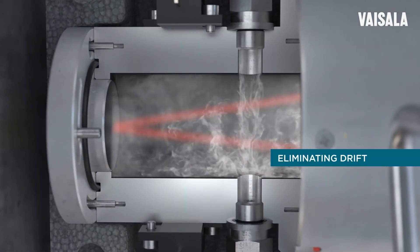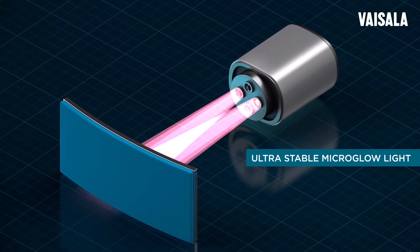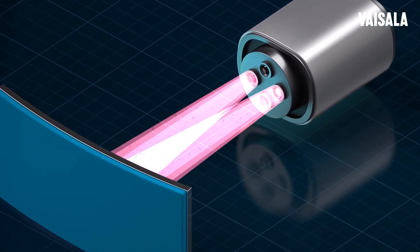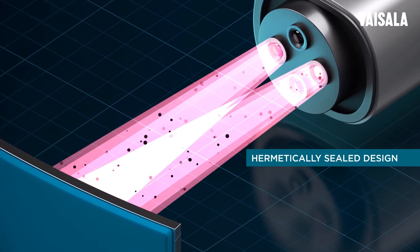Vaisala has a solution for eliminating drift, a more reliable way to measure. The Optimus OPT100 online DGA monitor is built with an ultra-stable microglow light manufactured in our own clean room and a hermetically sealed design that prevents contamination of the optics.